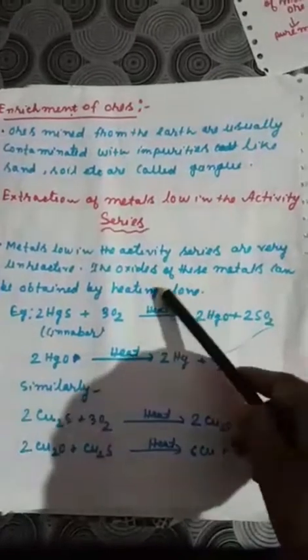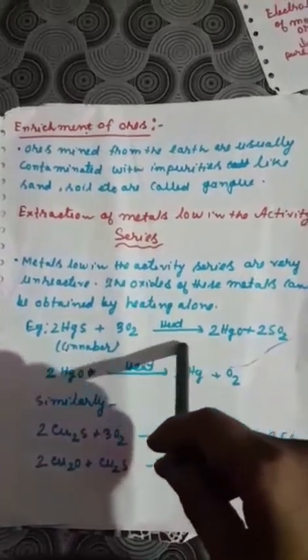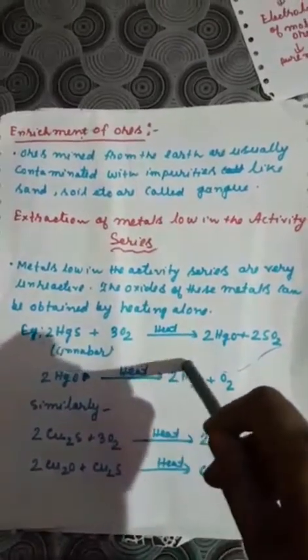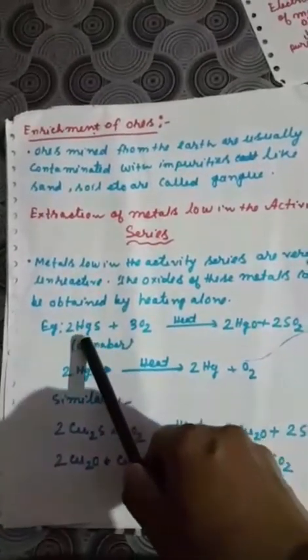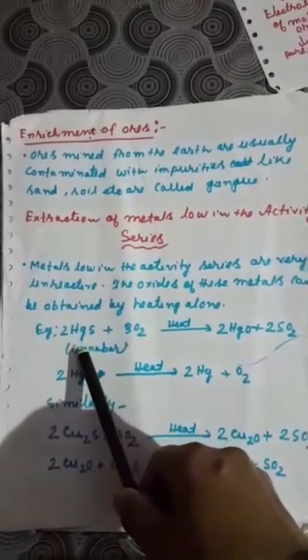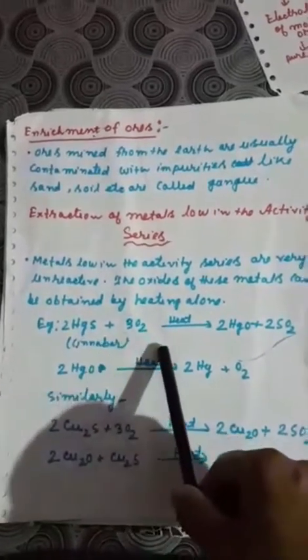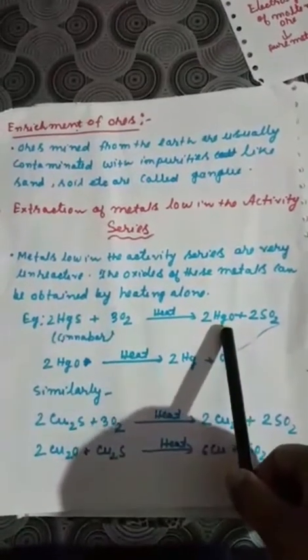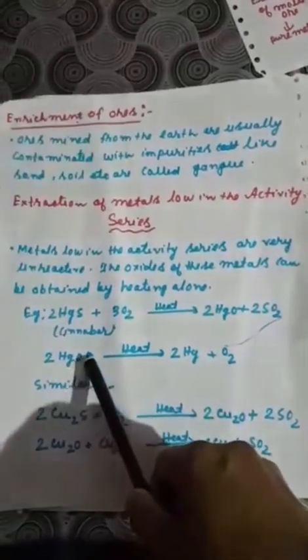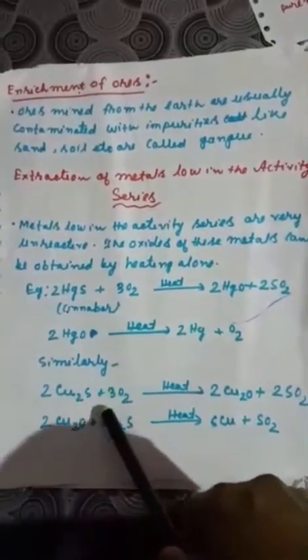Extraction of metals low in the activity series: metals with low reactivity can be obtained by simply heating in the presence of excess air — this is called roasting. For example, mercury has very low reactivity. Mercury sulphide is called cinnabar. When heated strongly in the presence of excess oxygen, we first get the oxide of mercury, and continuing to heat ultimately gives us the pure metal. Similarly for copper sulphide.